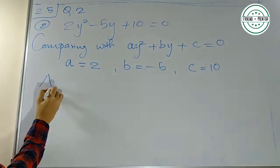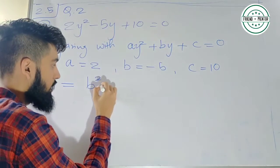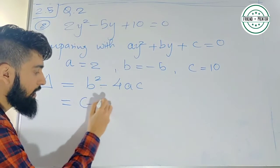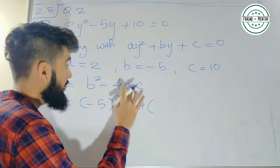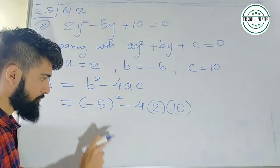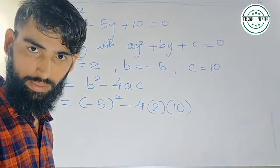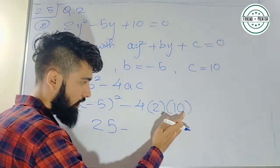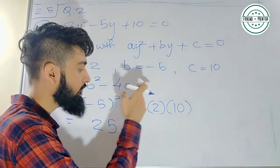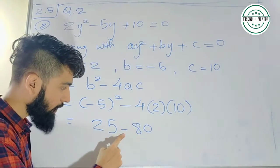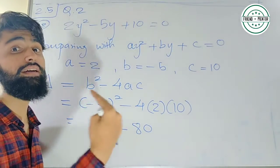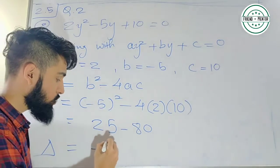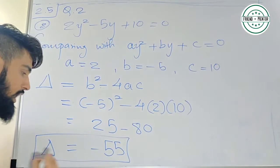Discriminant क्या होता है — delta, that is same as b² − 4ac. याद रखना है, discriminant is delta, which is same as b² − 4ac. b का value है minus 5, उसका square minus 4, a का value is 2, c का value is 10. Minus 5 का square करोगे तो वो plus ही होता है — minus 5 into minus 5 is 25. So it is 25 minus 80. Difference is 55, so discriminant का value मिला minus 55.